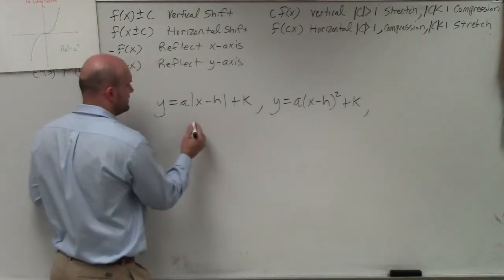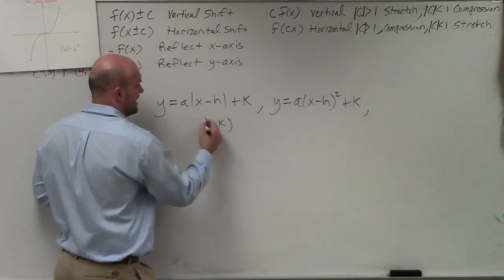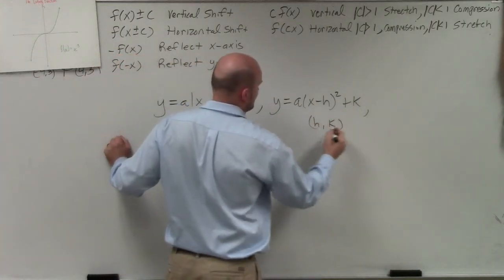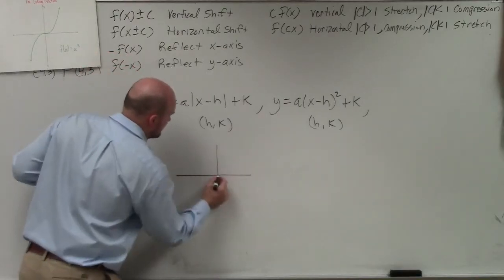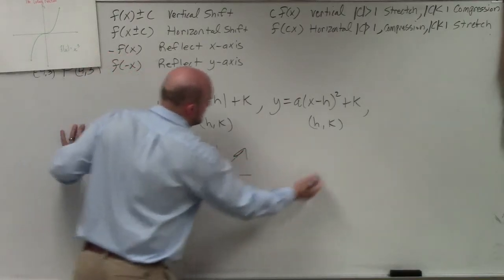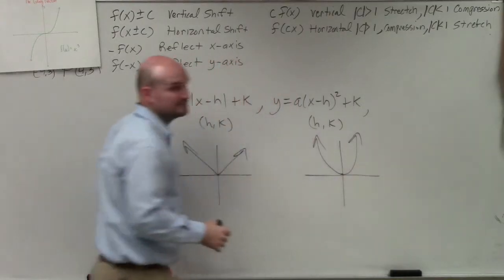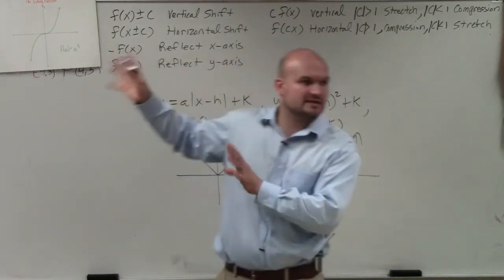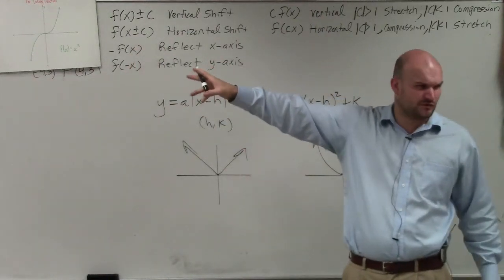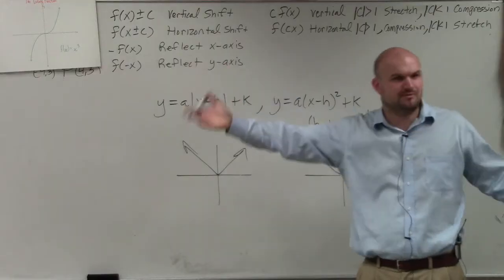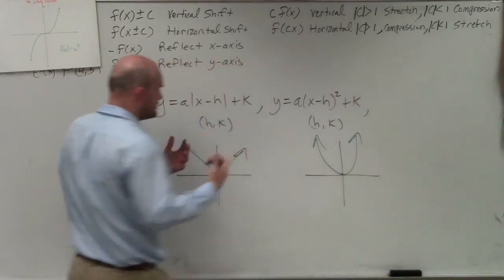Because one thing we learned is, like our vertex, our minimum point was h comma k, h comma k, right? And if you're graphing them, these graphs look very similar to each other, correct? When you guys are doing your little thing that we did last class period, they almost said they actually do have the exact same answer for everything we did last class period. The minimum, the maximum, the increasing, decreasing, end behavior, and all that kind of stuff. So they look very similar to each other.